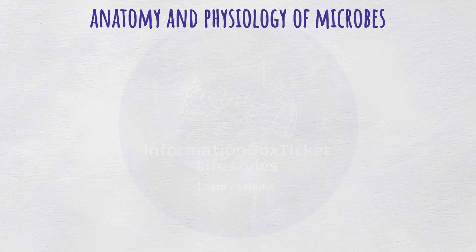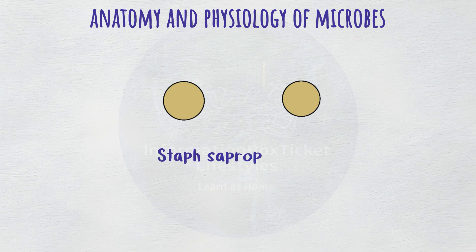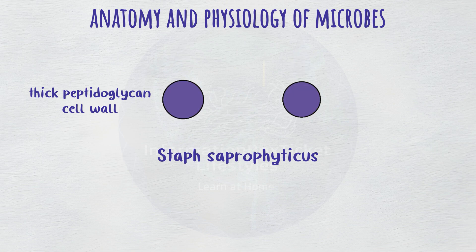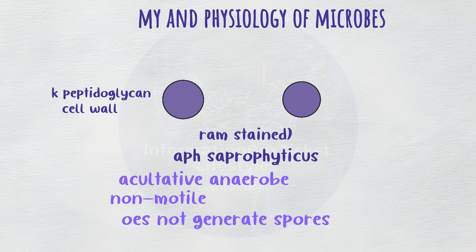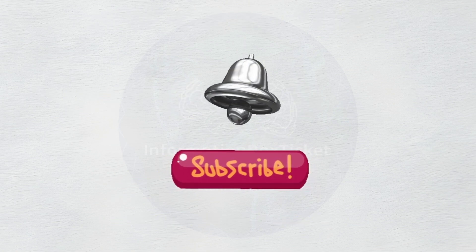A brief overview of the anatomy and physiology of microbes now. Gram-positive bacteria, such as Staph saprophyticus, have thick peptidoglycan cell walls that absorb purple dye when subjected to gram staining. It can survive with or without oxygen because it is a facultative anaerobe, non-motile, and does not generate spores.